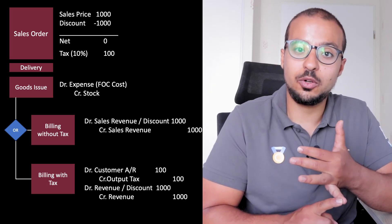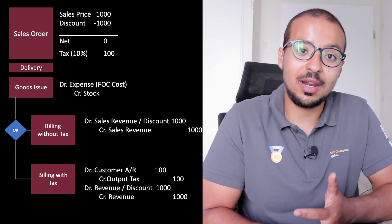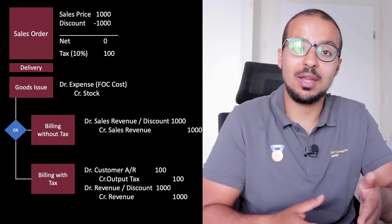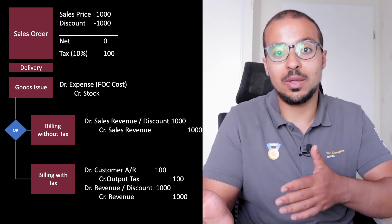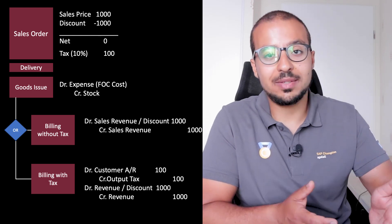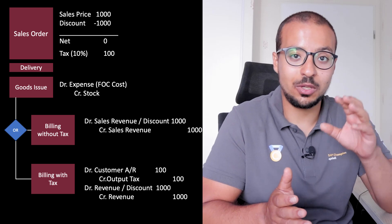I will start by creating a sales order for a normal item that we sell free of charge, then create an outbound delivery, post goods issue, and show you the accounting entry. Then I'll post a billing document and show you the billing accounting entry. I will also demonstrate both cases — with and without sales tax — and show how to create one sales order with one standard line item and one free of charge line item.